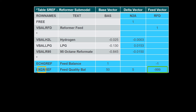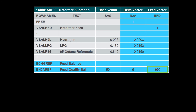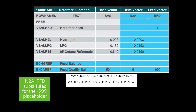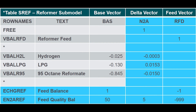So the three-character tag after E in the row name should be the tag for the quality that affects the yields. According to the row name and column name where the negative 999 is entered, PIMS will pick up the quality value and place it in the matrix. So in this example, negative 999 in the E N2A ref row is the N2A value of the RFD stream. We need to keep in mind that the feed quality may be higher or lower than the base value, so we need to allow the quality adjustment to be positive or negative by designating the delta vector as a free column. To do this, in our submodel, we put a 1 under the delta vector in the free row.